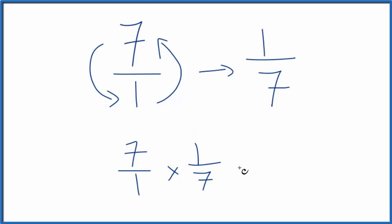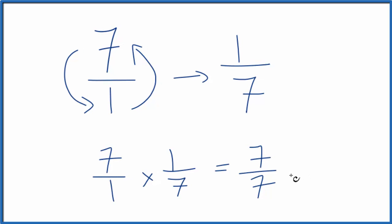So 7 times 1, that equals 7, and 1 times 7, that equals 7. If you divide 7 by 7, you get 1. So we did the first part correctly. The reciprocal for 7 is 1 over 7.